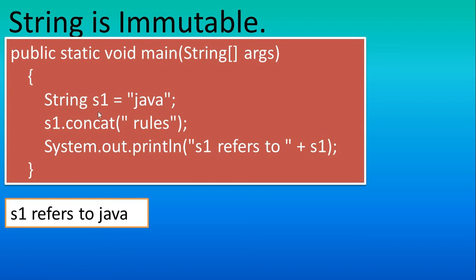But when you run this program, you get the output s1 refers to 'Java' only. Why? Because whatever value is referred to by s1 cannot be changed — the original value cannot be changed. That's why it is known as immutable.